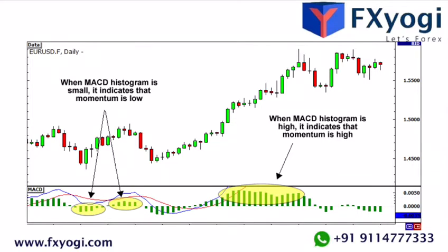MACD can be displayed in several ways, but one of the most useful ways is to look at it as a histogram. What this histogram does is show the difference between the slow and the fast MACD line.